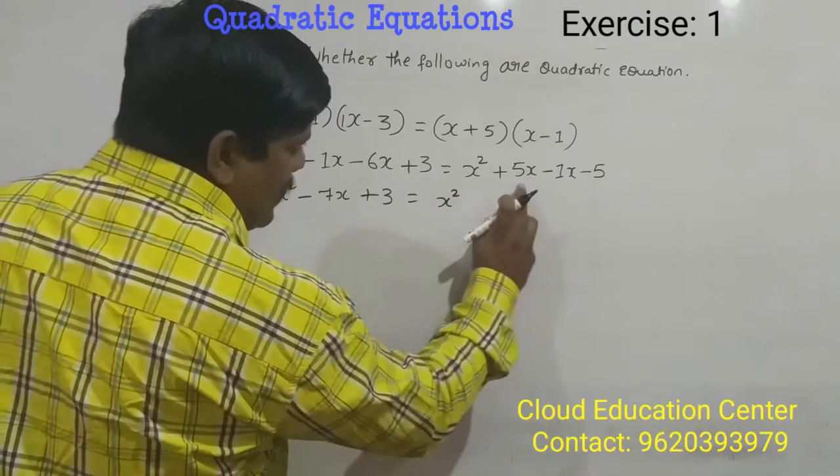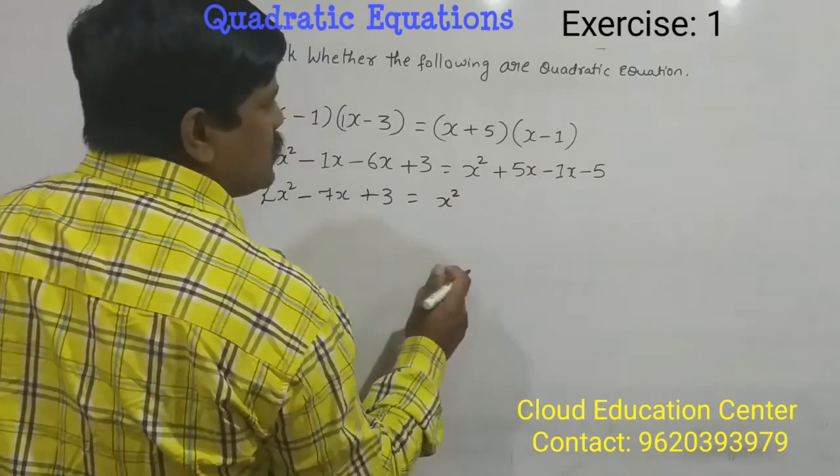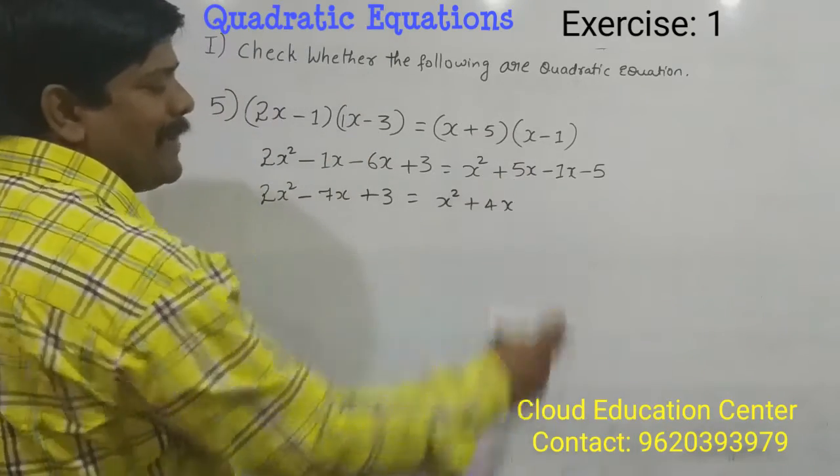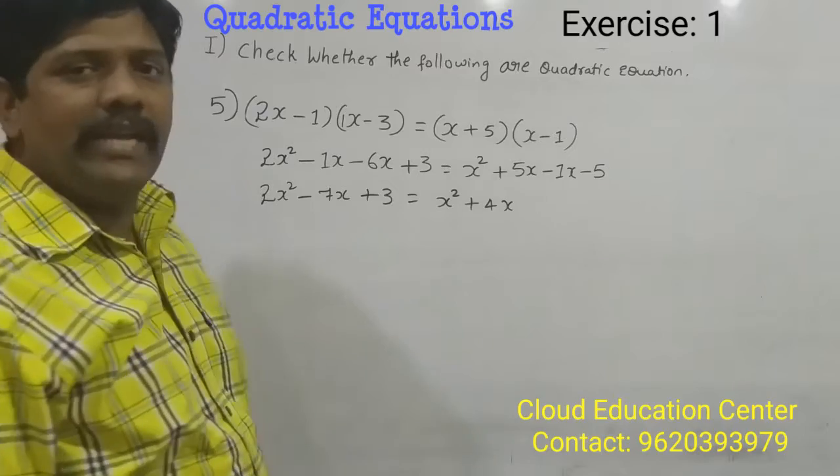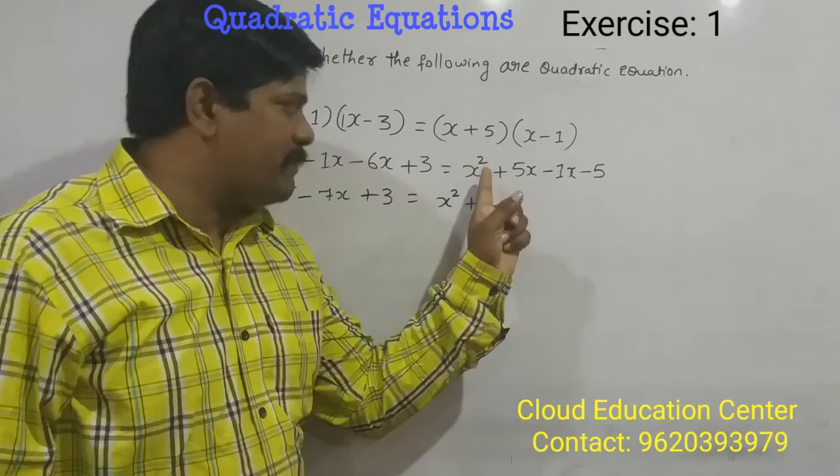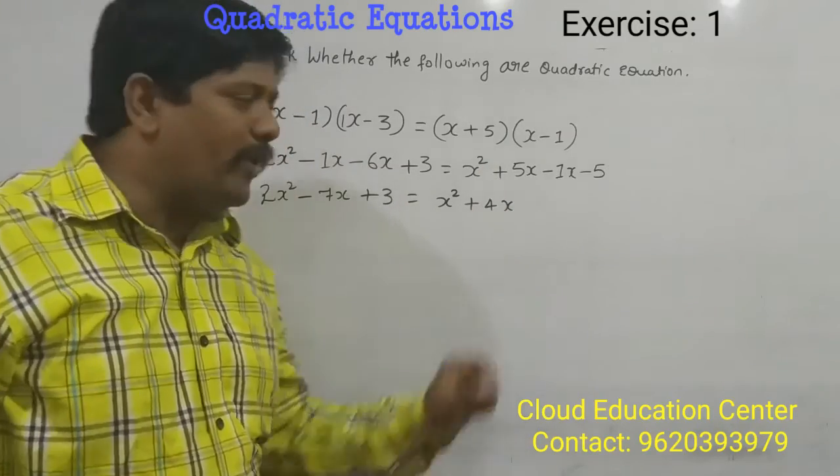It is x square plus 5x minus 1x is nothing but plus 4x, because we have plus, we have minus. When opposite sign is there, we have to subtract, so I subtract it and greater number sign is plus, so I take plus 4x.